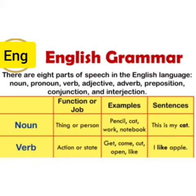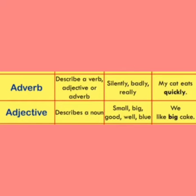In this way we can remember about parts of speech like noun and verb. Adverb: describes a verb, adjective, or adverb. Examples: silently, barely, really. Sentence: My cat is quick.